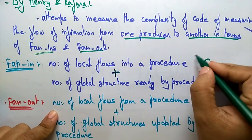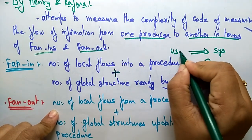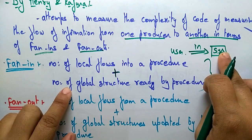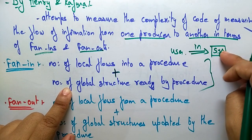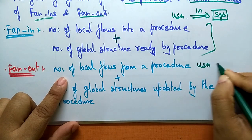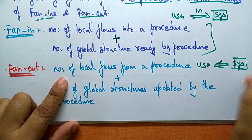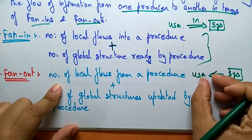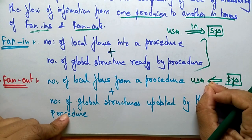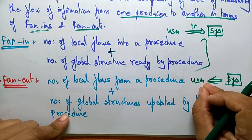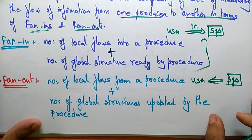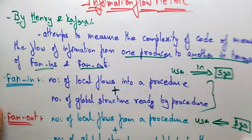Fan-out calculates the number of local flows from a procedure — from the user to the system. Fan-in is the number of local flows into a procedure plus the number of global structures read by the procedure. Fan-out is the number of local flows from a procedure plus the number of global structures updated by the procedure — meaning after execution, output is sent to the user along with updated global structures.